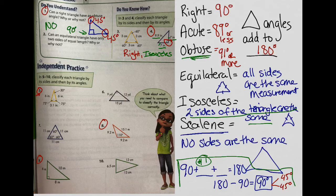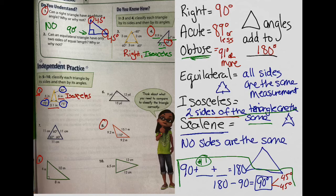Example five: go by the measurements, not by what the picture looks like. We have six inches, six inches, and three and one-tenths inches. Two sides are the same, so this is isosceles again. Now for the angles: a 30-degree angle, a 75-degree angle, and a 75-degree angle, which all total 180 degrees. There's no right angle — none of those are 90 degrees and I don't see a little box. Checking acute: 30 is less than 89, and 75 and 75 are both less than 89. So this is an isosceles acute triangle.